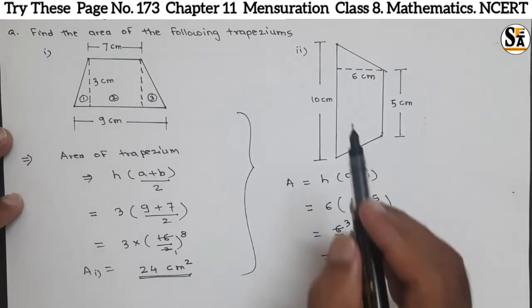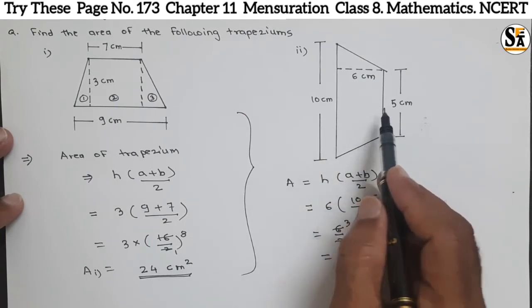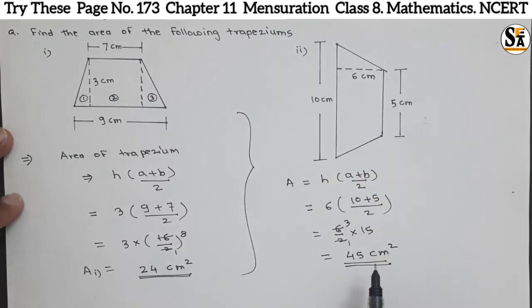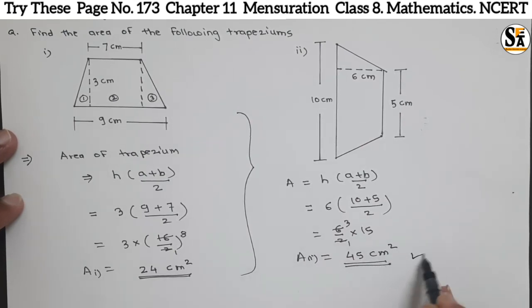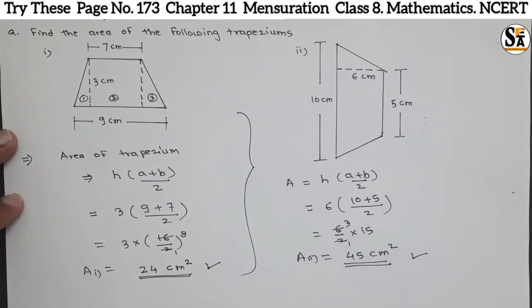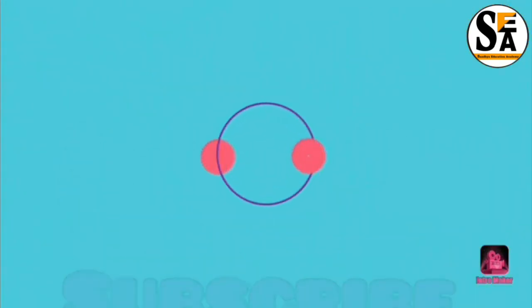So it is very simple to calculate the area of a trapezium if we know the lengths of the two parallel sides and the perpendicular distance between them. Our first answer is: area of the first trapezium is 24 centimeter square, and area of the second trapezium is 45 centimeter square. This is all for this video. We will meet again in our next video. Do learn, do enjoy. Thank you.